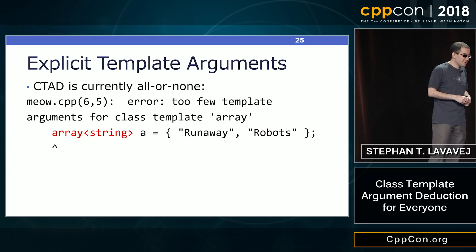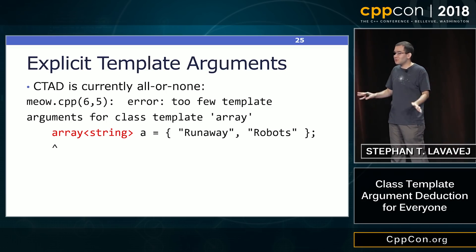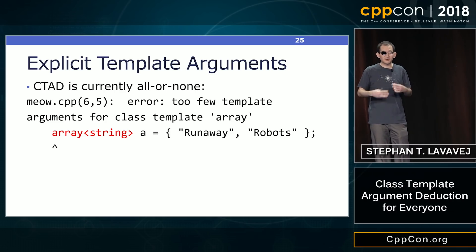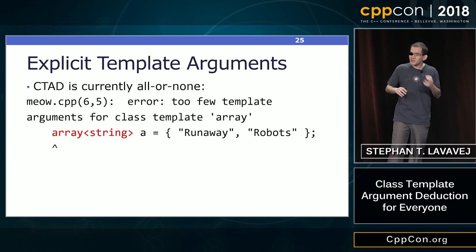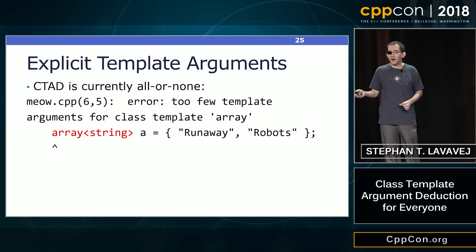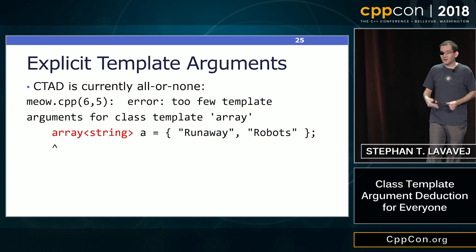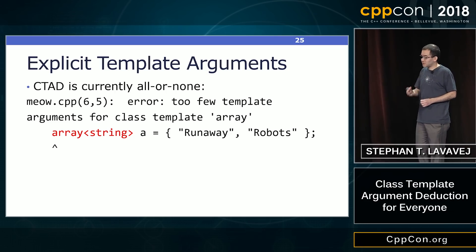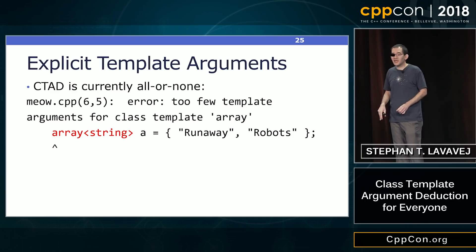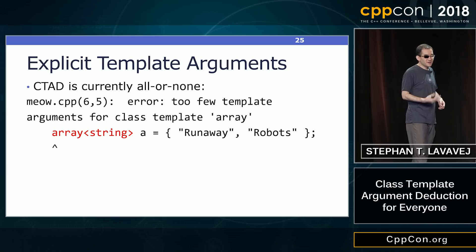CTAD is all-or-none. Either you provide no explicit template arguments, in which case CTAD can help you, or you provide all of them and you explicitly specify. If I try to say I want an array<std::string, N> and let CTAD deduce only N — the count — it's not going to work. You're going to get the classic C++98-style error saying too few template arguments: I need an N, there's no default, and I can't deduce it. This may be lifted in the future.